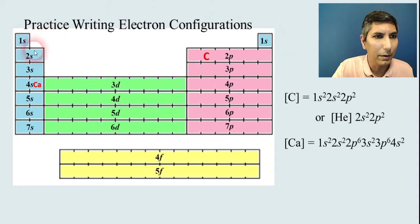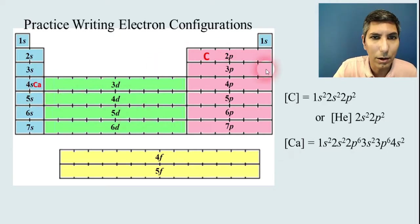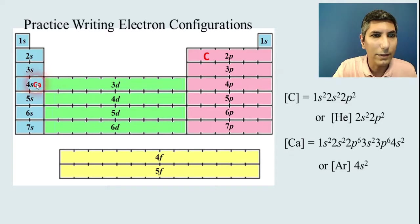Then 2s² 2p⁶ because there are six boxes in that 2p section. Back around to 3s² and then 3p⁶, and then 4s² because calcium is the second box in the 4s section. So you can write your electron configuration just like that. If you want to abbreviate it using the noble gas abbreviations, you would back up to argon, which is right before that, and say [Ar] 4s².